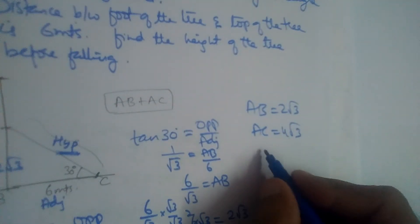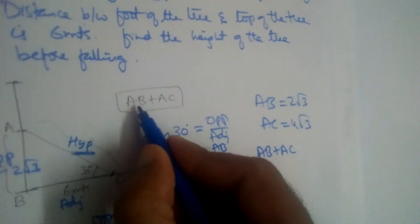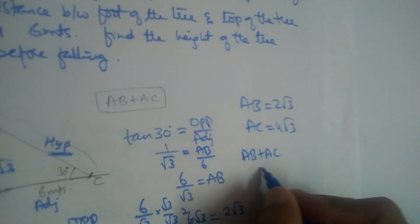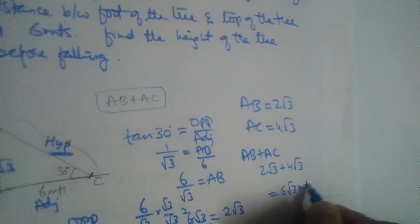So height of the tree before falling is AB plus AC. AB plus AC. So it will be 2 root 3 plus 4 root 3 is equal to 6 root 3 meters.